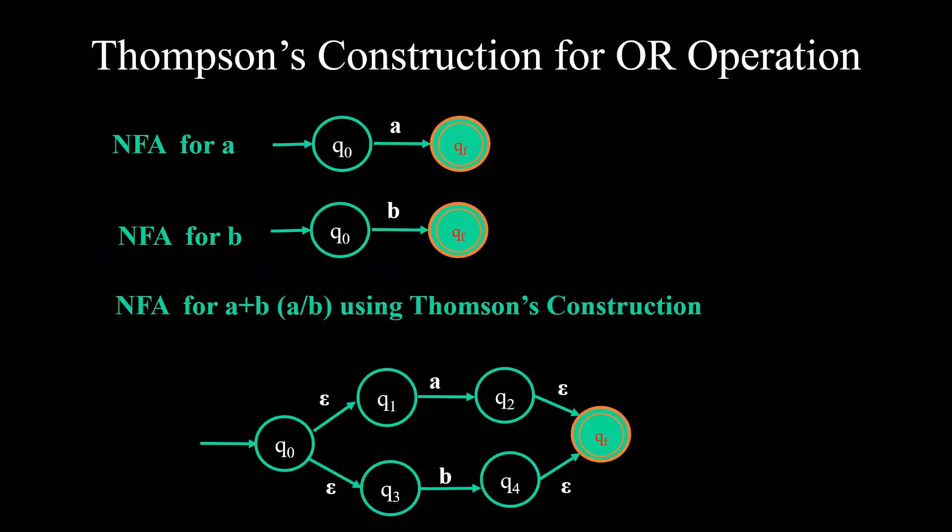If I talk about OR operation that is the third operation, I have an NFA for a, I have an NFA for b and I want to find NFA for a plus b or a or b. Please remember these both symbols have same meaning. You can put plus, you can put OR, slash, they both represent OR operation. Now I start with q0. I move towards q1 consuming only epsilon. I move towards q3 consuming only epsilon. Now I can move towards a or b and I can traverse either a or b and then I can go to q2 state or I can go to q4 state.